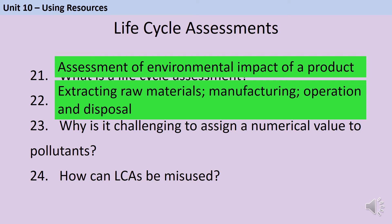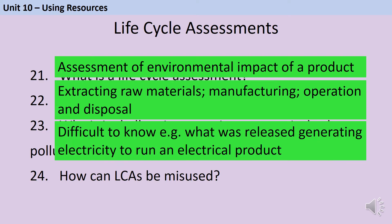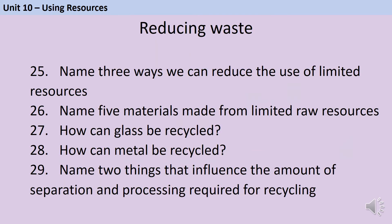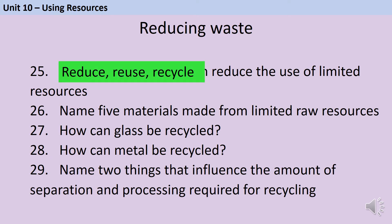The electricity could be from a coal power station, a nuclear power station, or a wind turbine — you have no way of knowing. Companies can misuse an LCA because they write them themselves, so they can be selective or abbreviated and miss out information. They can use this when advertising a product to claim it's great for the environment, when actually the information is biased and not impartial. We can reduce the use of limited resources by reducing how much we use, reusing things after we've made them, and also by recycling them.